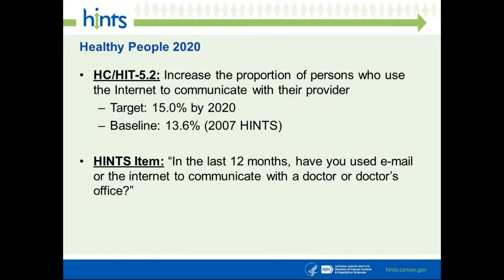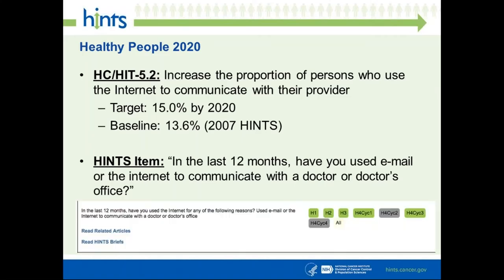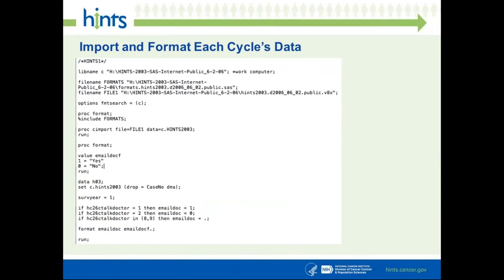The baseline was set using HINTS 3 data at 13.6 percent, with a 10 percent improvement aimed for by 2020. The HINTS item specifically was: 'In the last 12 months, have you used email or the internet to communicate with your doctor or a doctor's office?' If you go to the website, you can see it was asked in five cycles — skip HINTS 4 cycle 2 and HINTS 4 cycle 4. Since HINTS 3 is involved, we're going to have to pump the brakes a little.